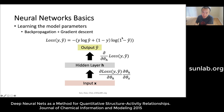The training method is backpropagation, essentially a gradient descent-based method. It works from the output layer and gradually calculates all the gradients back through the network. This is a very efficient way to compute gradients and is how the neural network is trained.